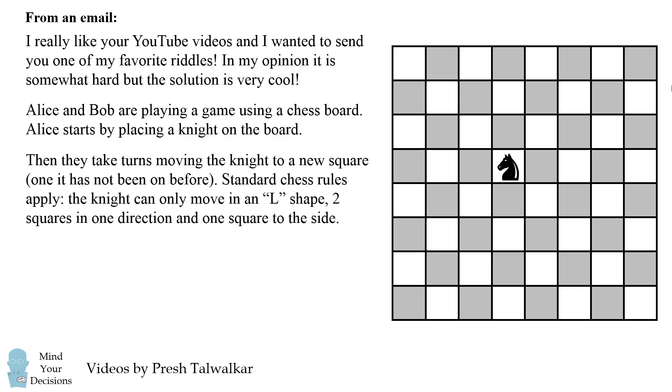Standard chess rules apply. The knight can only move in an L shape - two squares in one direction and one square to the side. This is one possible place the knight could go and these are all the other places the knight could go from the original square.